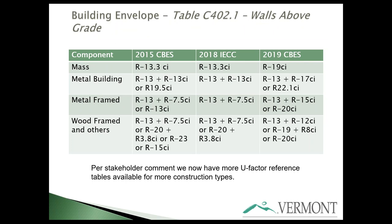For walls above grade, focusing on metal frame buildings: previously R13 plus 7.5 continuous, now R13 plus 15 continuous — or as an alternate if done entirely continuous, it went from R13 to R20. Wood framing went from R13 plus 7.5 continuous to R13 plus 12 continuous; entirely continuous went from R15 to R20. These numbers were chosen so that all options have very close U-values when combined with the framing, making them more aligned than in 2015.